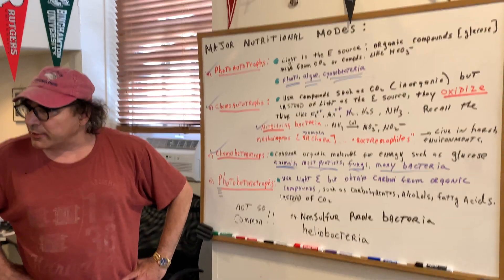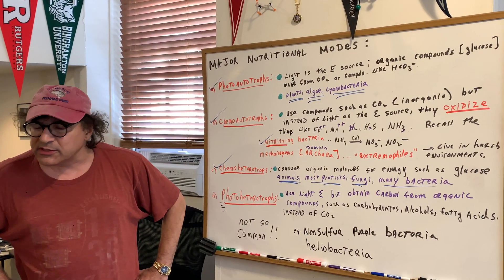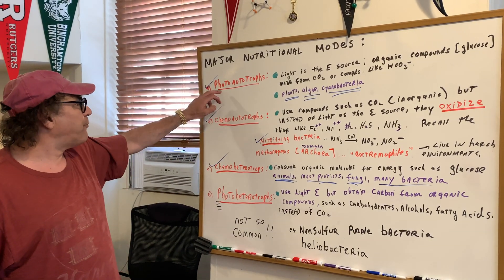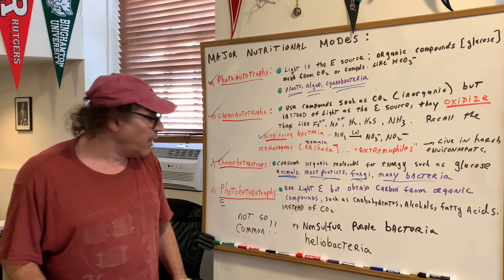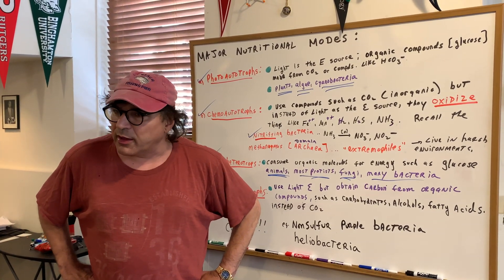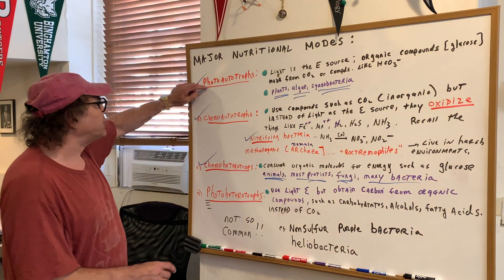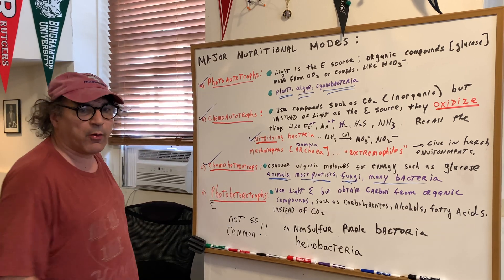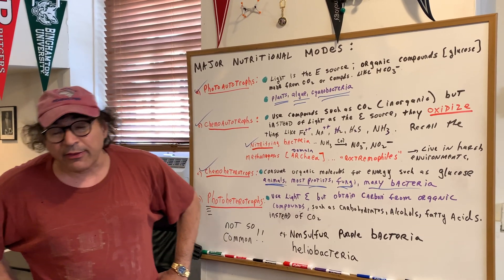So there you have it. Make sure you know these — any one of these is fair game: photo autotrophs, chemo autotrophs, chemo heterotrophs, and photo heterotrophs. Start off with the two simple ones — photo autotrophs and chemo heterotrophs — and the rest should fall into place.